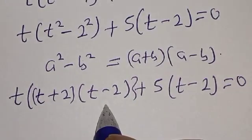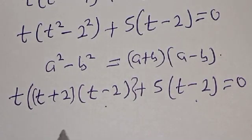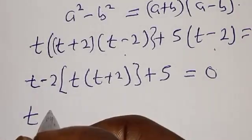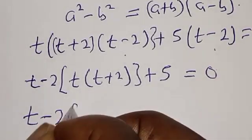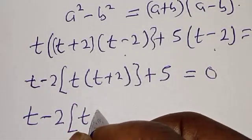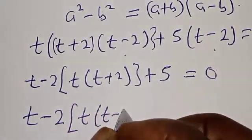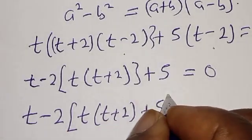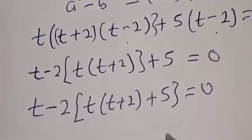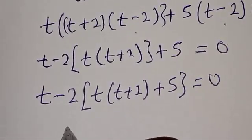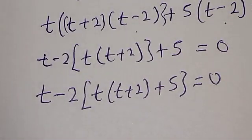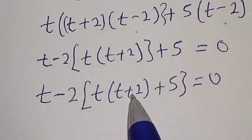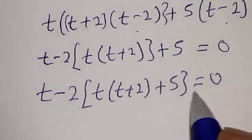Here we have t minus 2 appearing in both terms, so let's factor it out. We have t minus 2 into t times t plus 2 plus 5 is equal to 0. We now have two cases: t minus 2 equals 0, and t into t plus 2 plus 5 also equals 0.